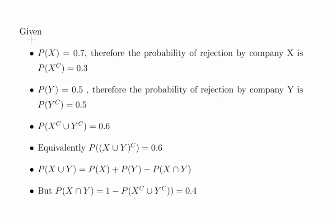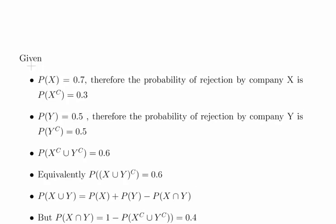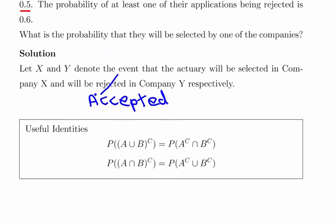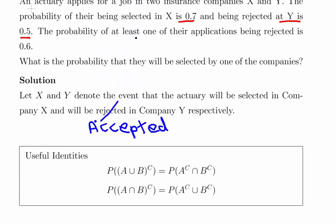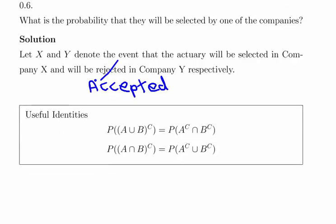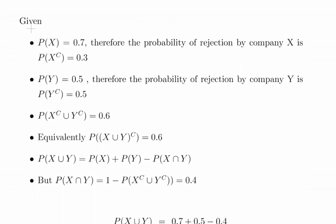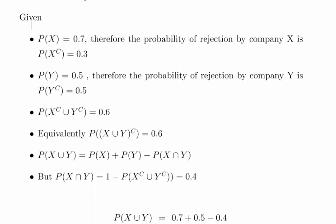We are told that the probability of at least one of their applications being rejected is 0.6. At least one, okay, so how do we write that? At least one of their applications being rejected, so it's one or the other or both.